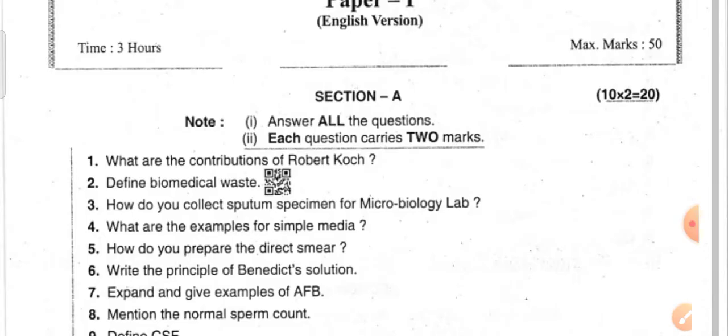So what are the contributions of Robert Koch? This is mainly related to the identification of acid-fast bacilli in TB patients.